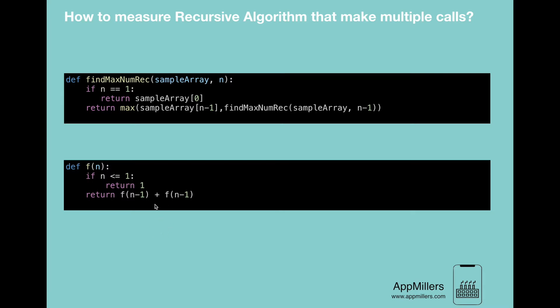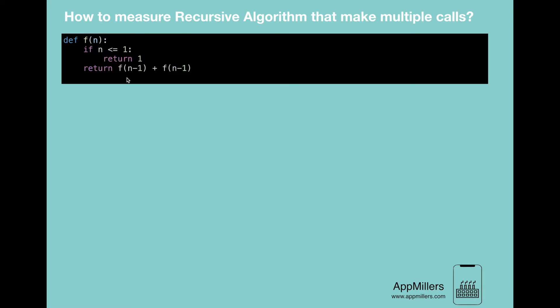Rather than making assumptions, let's derive the runtime by walking through the code. Suppose we call this function for n equals 4. When we run this function with f(4), it will call f(3) twice. Then each f(3) will call f(2) twice, which makes it 4.